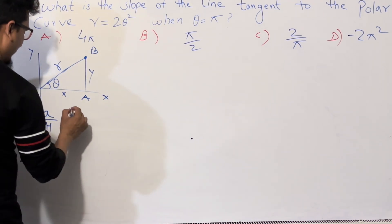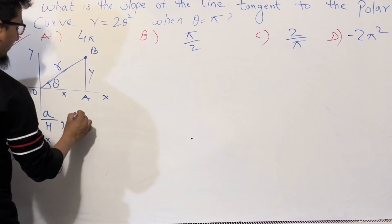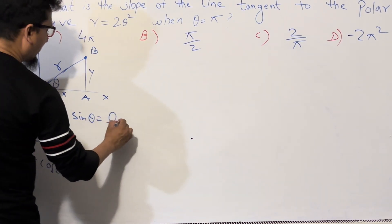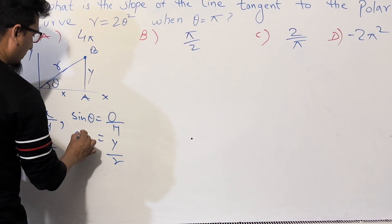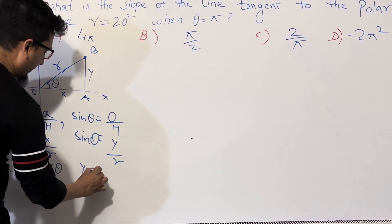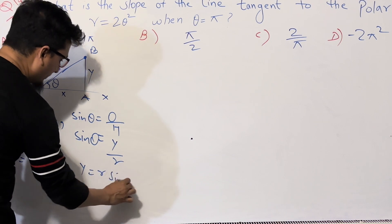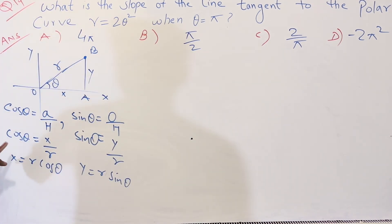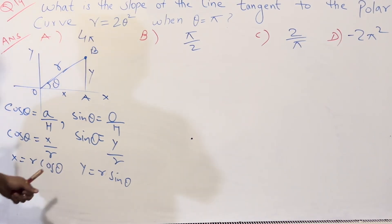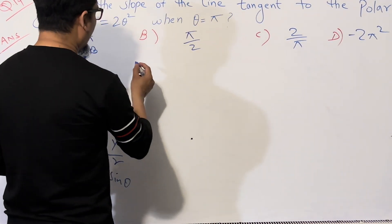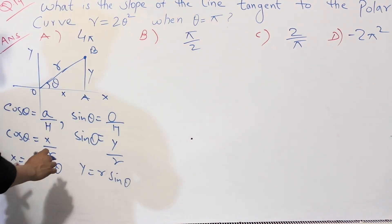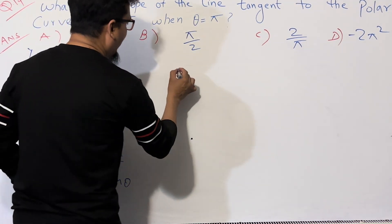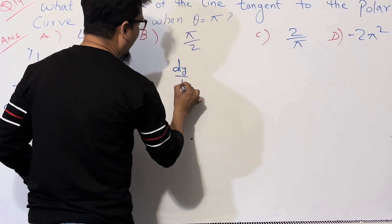In the same way, sin θ is equal to opposite divided by hypotenuse, which is y divided by r. So y can be written as r sin θ. Now we have x = r cos θ and y = r sin θ, and we need to find dy/dx.